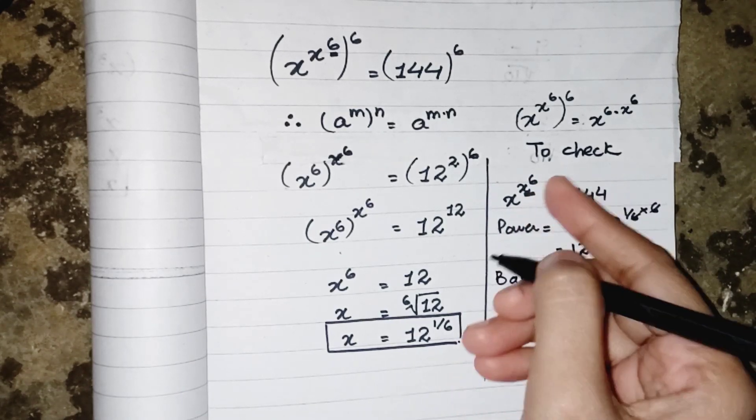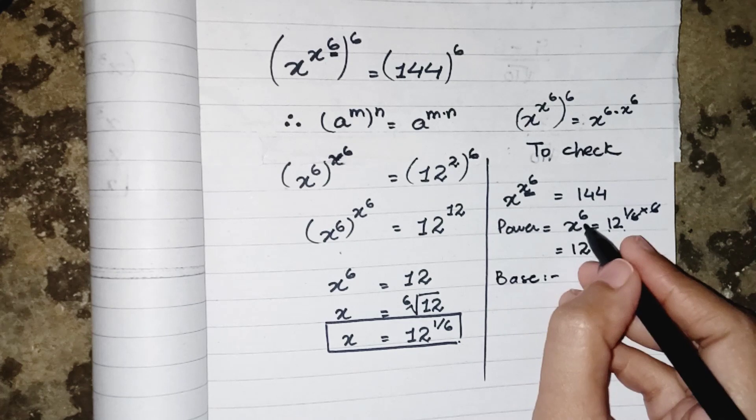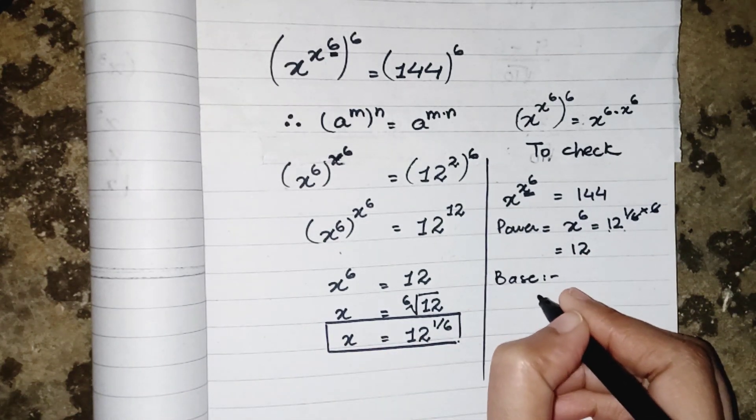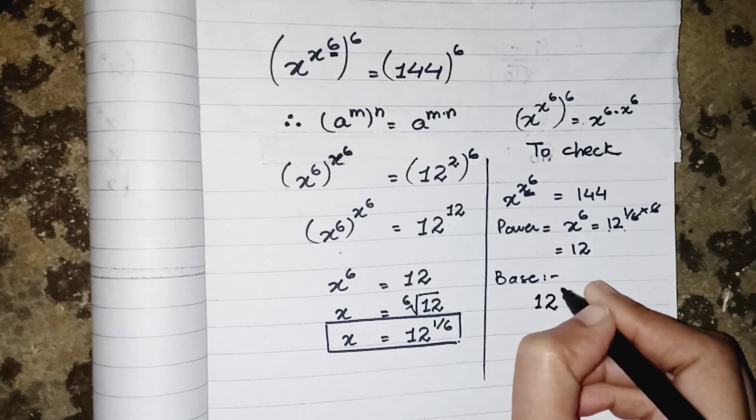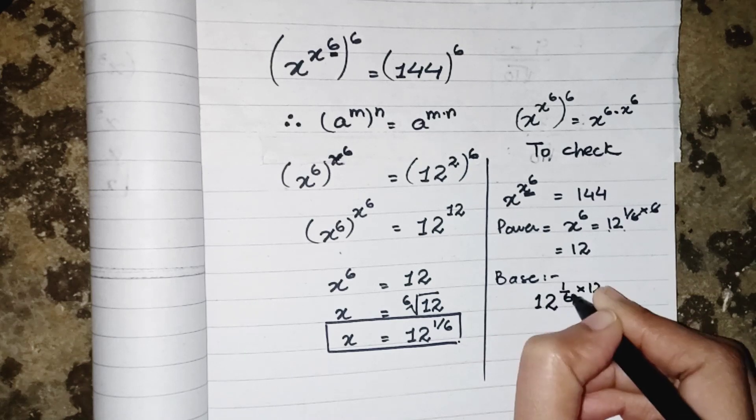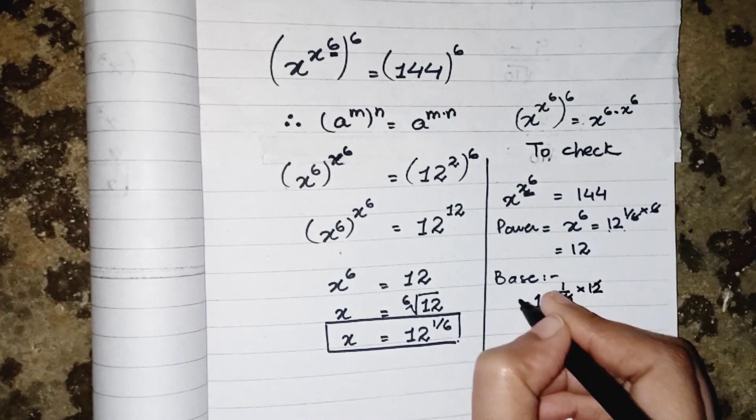(x^6). So in place of x^6 we are writing 12, and the value of x is 12^(1/6). Multiply by 12: 6 and 12 are cancelled out to each other.